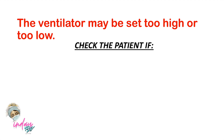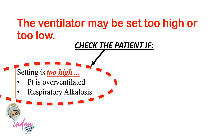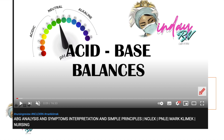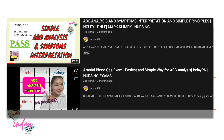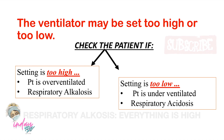When ventilator settings may be too high or too low: always check the patient first when an alarm sounds. If the setting is too high, the patient is over-ventilating, and ABG analysis will show respiratory alkalosis. If the setting is too low, the patient is under-ventilating, and ABG analysis will show respiratory acidosis. Check the ABG analysis video on this channel for help with interpretation.